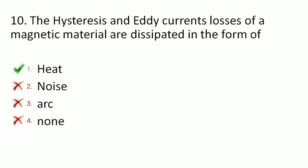Next is: the hysteresis and eddy current losses of a magnetic material are dissipated in the form of — heat, noise, R, or none? The correct option is heat. Hysteresis and eddy current losses are dissipated in the form of heat.